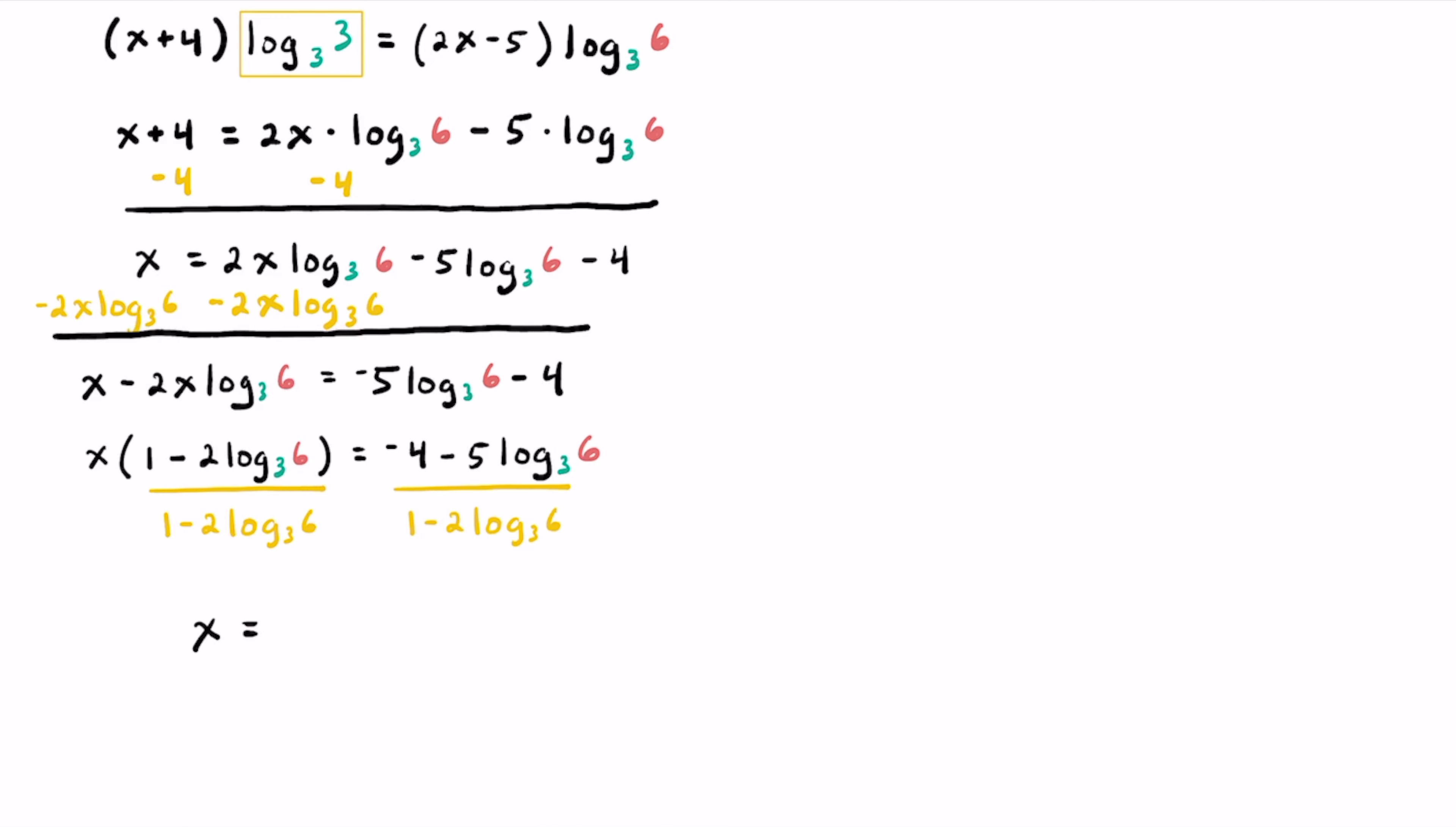We can write an exact answer of x is equal to negative 4 minus 5 times log base 3 of 6 in the numerator, and that's going to be on top of 1 minus 2 times log base 3 of 6.